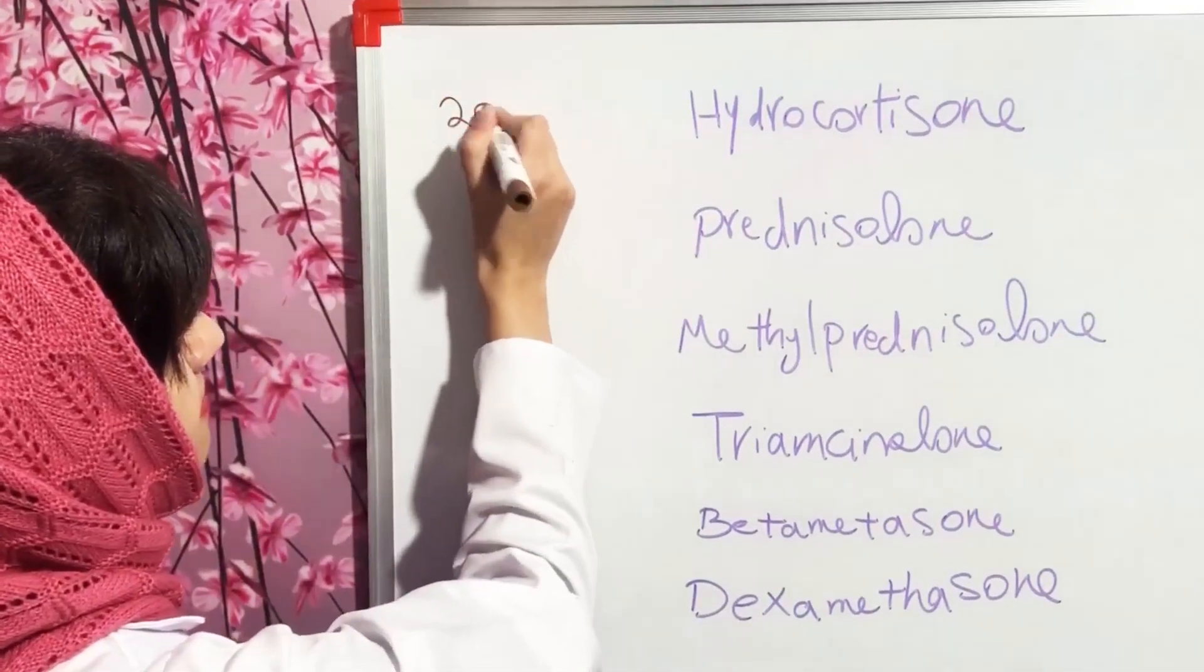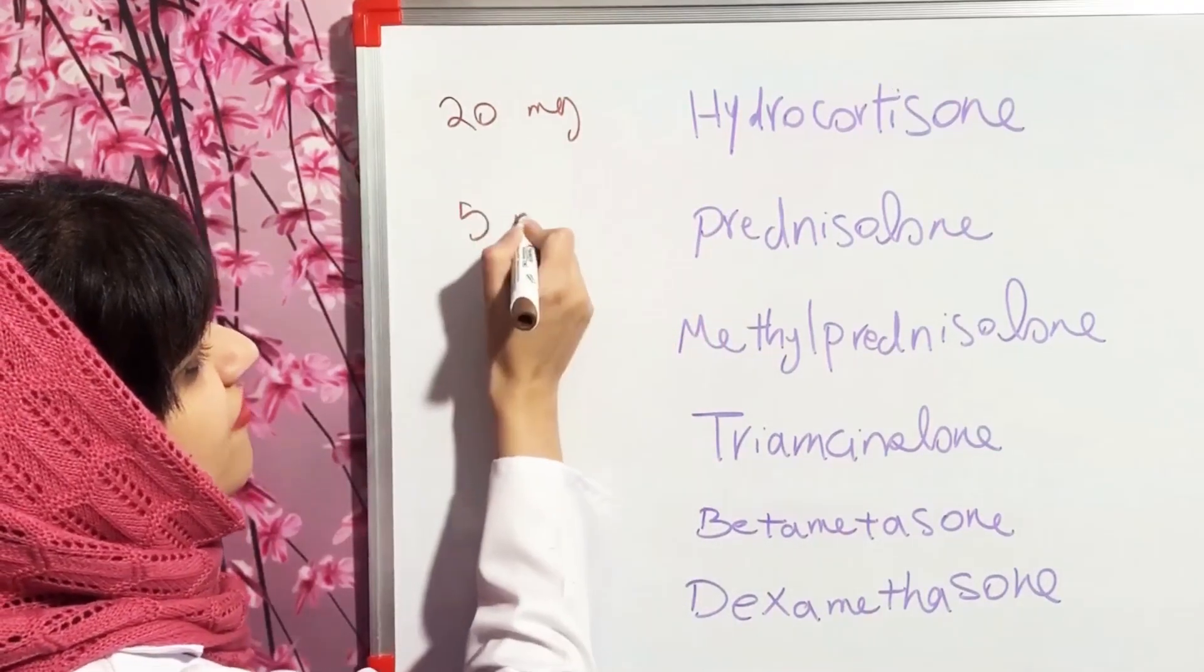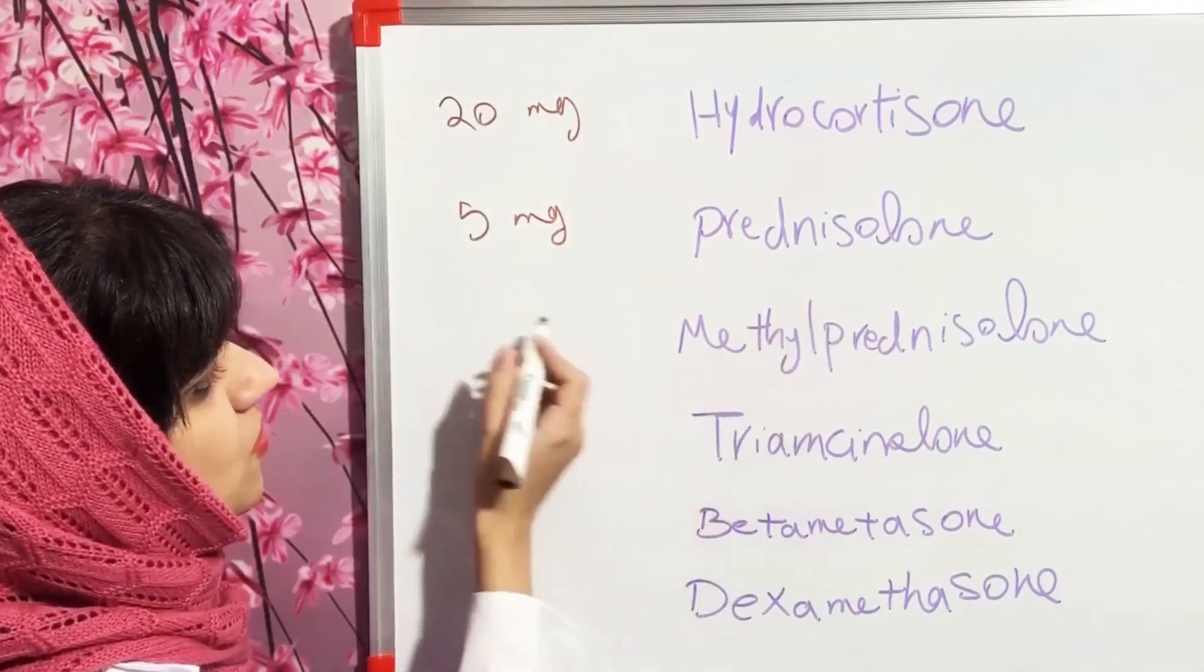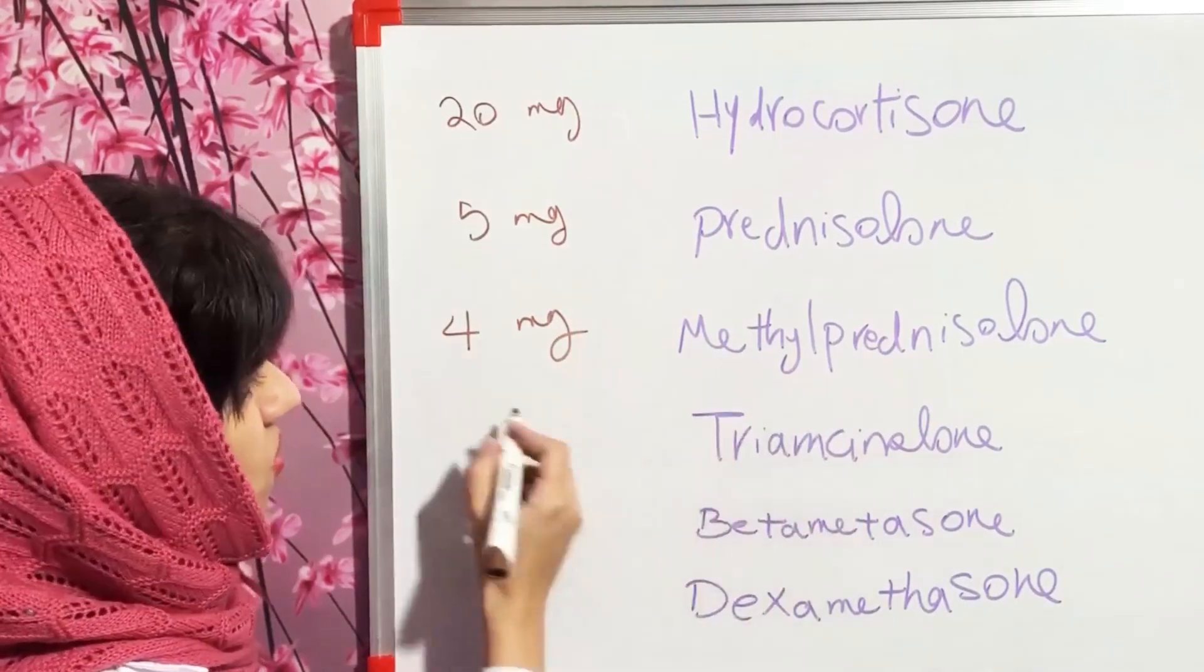20 milligrams of hydrocortisone is equal to 5 milligrams of prednisolone, 4 milligrams of methylprednisolone, 4 milligrams of triamcinolone, and 0.75 milligrams of betamethasone or dexamethasone.